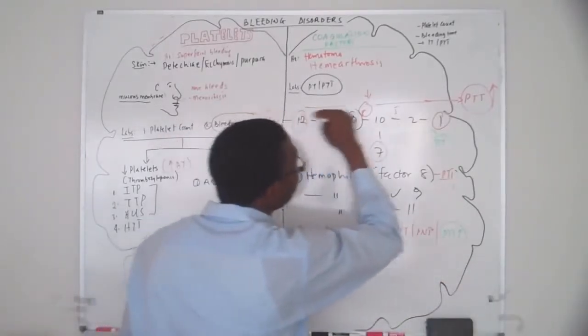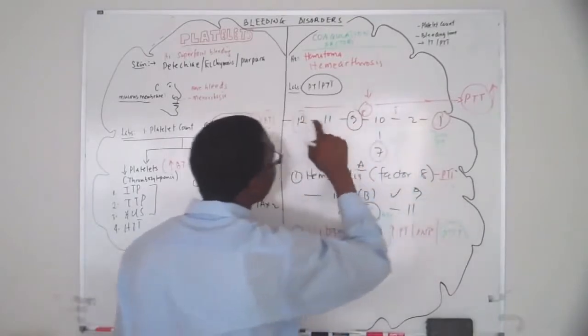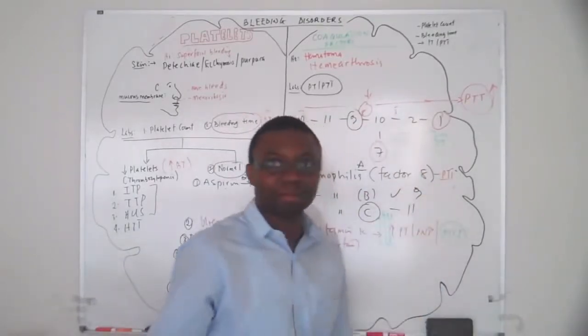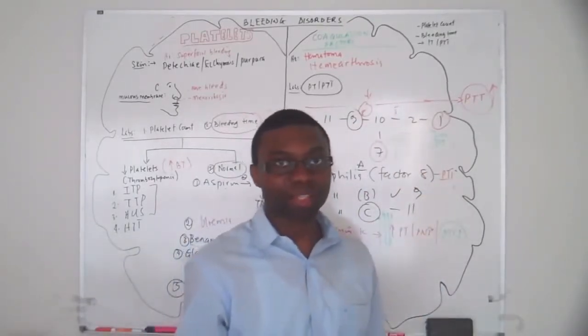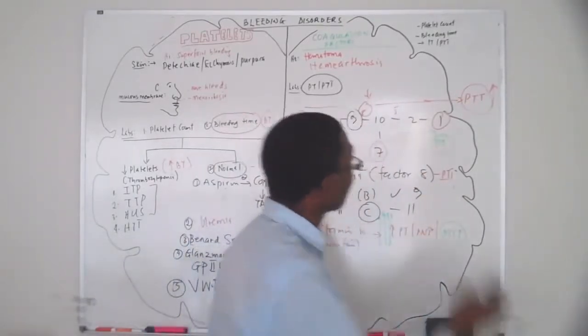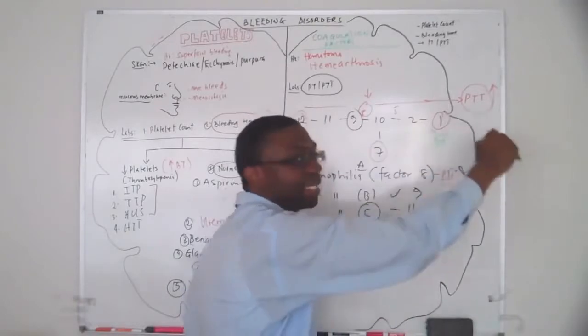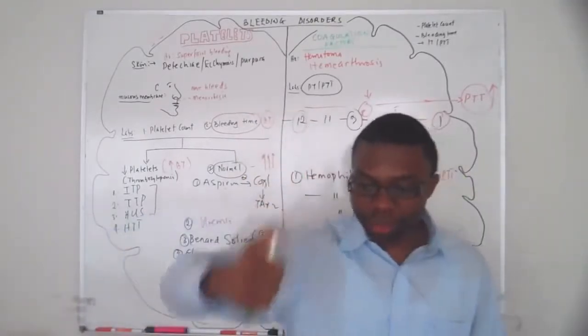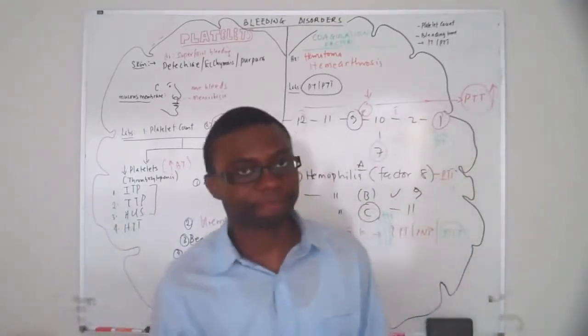For heparin: it inhibits factors 12, 11, 9, and 10 by acting on antithrombin III. So PTT is going to be extremely high.